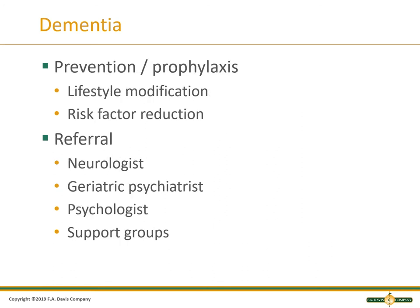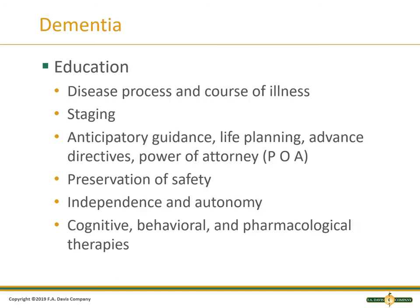For prevention and prophylaxis, lifestyle modification and risk factor reduction are key. Referral to a neurologist or geriatric psychiatrist is very helpful. Psychologists, support groups, and education — not only of the patient but of the family or facility — are important. Educate them about the disease process and how it can progress, how it is staged, and that there may be things to put in place such as advanced directives, power of attorney, and life planning.